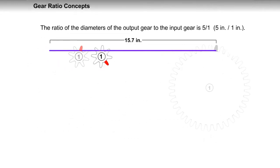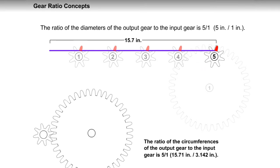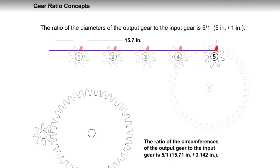The ratio of the diameters of the output gear to the input gear is 5 to 1. The ratio of the circumferences of the output gear to the input gear is 5 to 1.